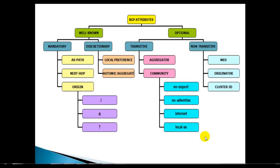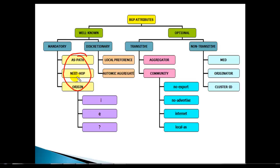In our previous video we covered the basic introduction to BGP attribute categories. We have four major categories: well-known mandatory, well-known discretionary, optional transitive, and optional non-transitive attributes. In this video we'll try to understand the three well-known mandatory attributes: AS path, next hop, and origin attribute.